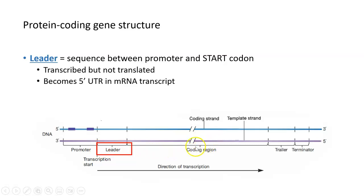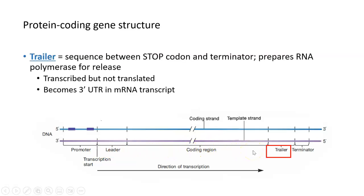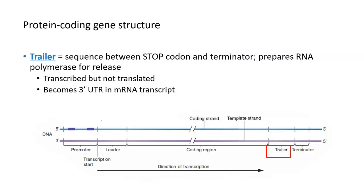Then we reach the coding region. Looking downstream on the other side, after the coding region, we come to a trailer sequence. The trailer comes immediately after the stop codon in the coding region of the gene, and it prepares RNA polymerase to be released. It is transcribed into RNA, but it is also never translated into protein.